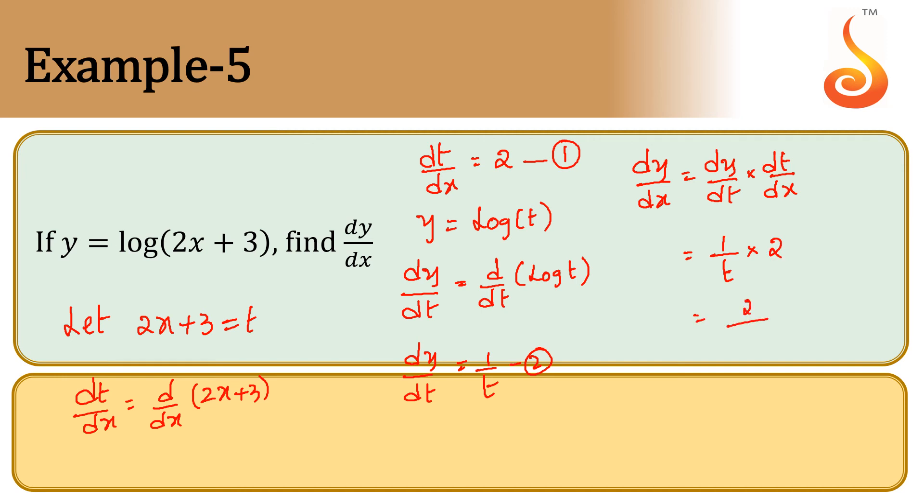Since t equals 2x plus 3, substitute this back. In place of t, write 2x plus 3. Therefore, dy/dx equals 2 over 2x plus 3.